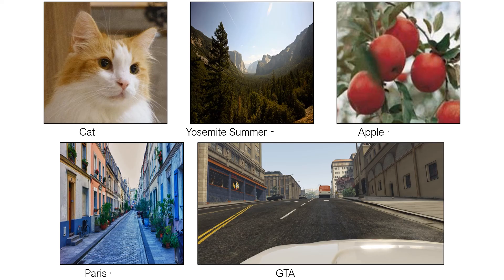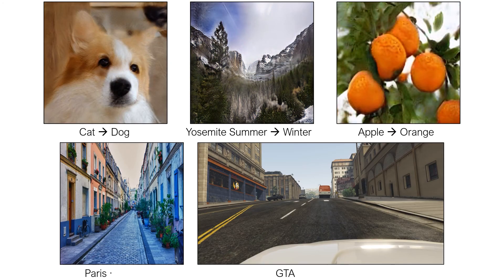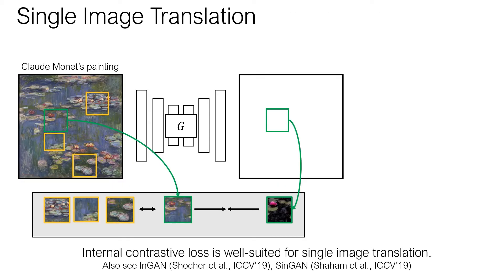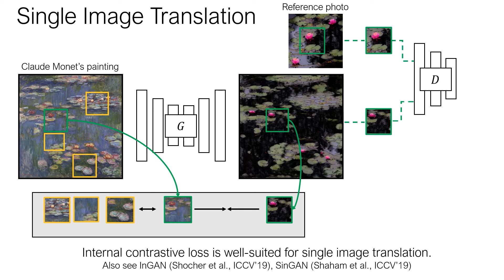Our default CUT model can be used on various image-to-image translation datasets. One way to quantitatively evaluate the quality of the results is using FID. It shows that our method is more powerful in distribution matching. Lastly, since our contrastive loss only uses internal patches from the same image, we can even apply our method on single-image datasets. Here, we take a high-resolution Monet painting and translate the image to the style of a target photograph using the patch discriminator. This setting connects image-to-image translation to image stylization methods.